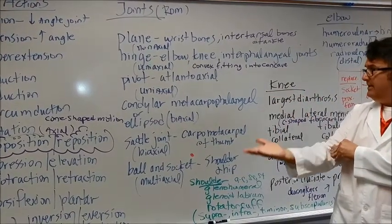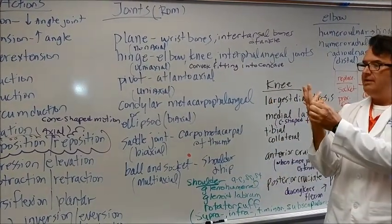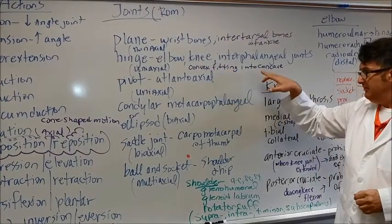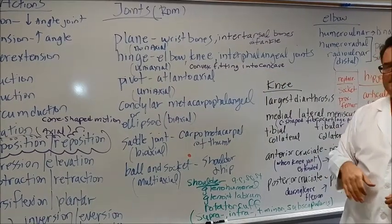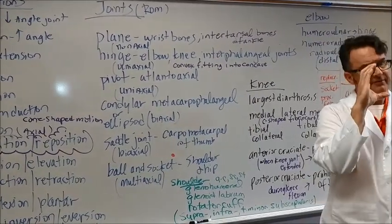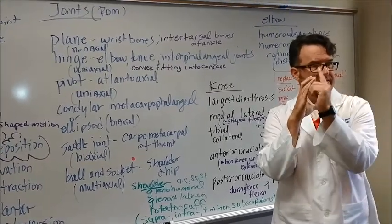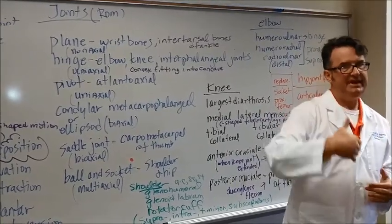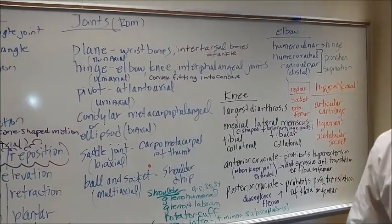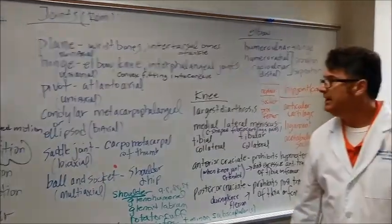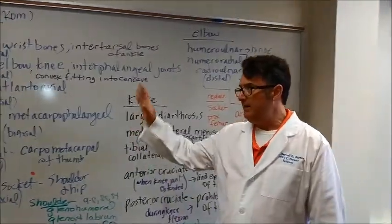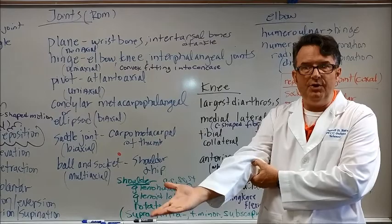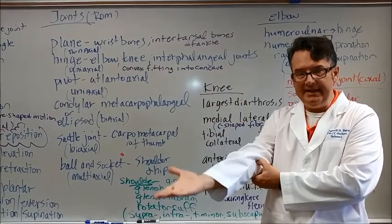Hinge joints include the elbow and the knee, the interphalangeal joints right here. These are uniaxial and consist of a convex fitting into a concave. I always remember that concave is the inny because that's what a cave does. It goes inward and convex is the out, the bulging out portion.